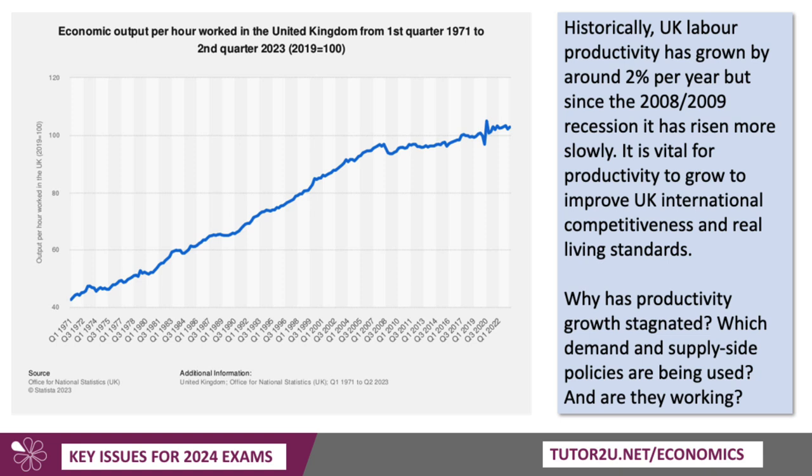Productivity is my next topic. Historically, labour productivity — output per person per hour worked — has grown by about 2% a year. But as you can see, since 2008 and the recession, the trend growth of productivity has certainly flattened, growing by less than half a percent per year. It's really important for productivity to grow to make the UK more competitive and to improve living standards. So why has productivity growth stagnated? This is a topic that has appeared on exams in the past and could well appear again. Which demand and supply side policies are being used or might be used, and are they working? Productivity growth is a big barrier at the moment to our living standards.